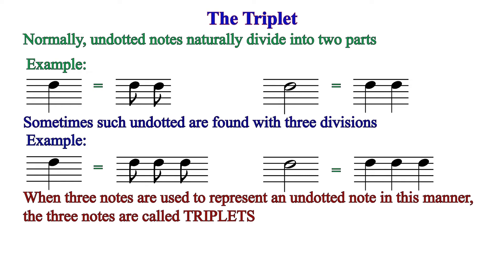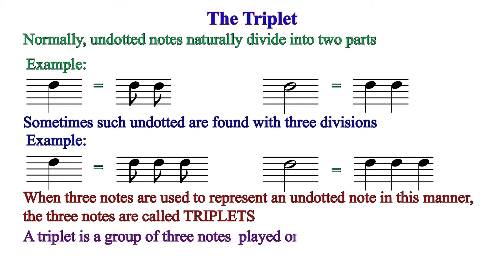The three notes are played or sung in the time of two notes. For instance, in the case of the crotchet — a crotchet is supposed to be two quavers, but now we put three. You still have to perform the three in the time allocated to the one crotchet. By definition, a triplet is a group of three notes played or sung in the time of two.